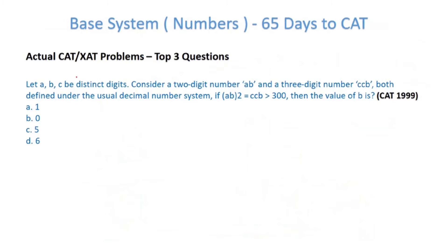Moving forward, next question. Let a, b, c be distinct digits. Consider a two-digit number ab and a three-digit number ccb, both defined in the usual decimal system. If ab² = ccb > 300, remember the value of b should be such that the square also has the same unit digit. So b can be 1, 5, 6, or 0.